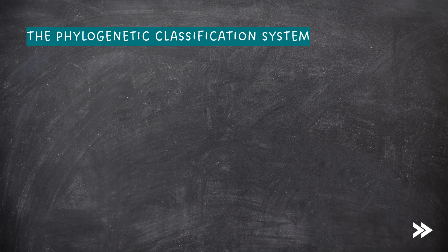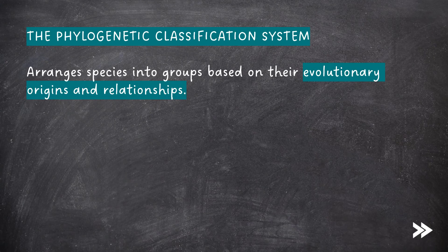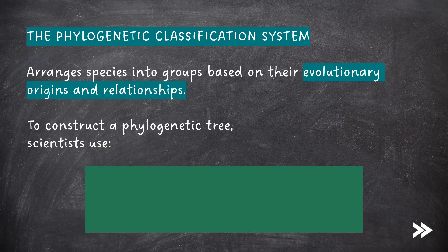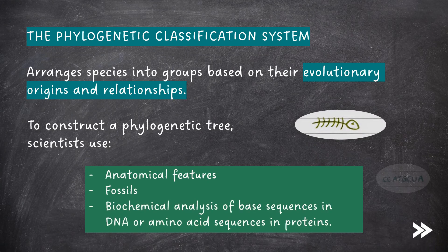Next, we need to know about the phylogenetic classification system. This classification system arranges species into groups based on their evolutionary origins and relationships. To construct a phylogenetic tree, scientists use anatomical features, fossils, or the biochemical analysis of base sequences in DNA, or the amino acid sequences in proteins.